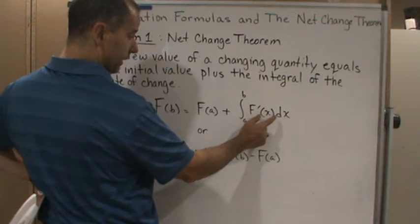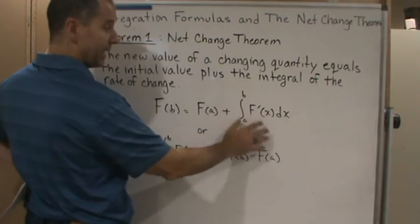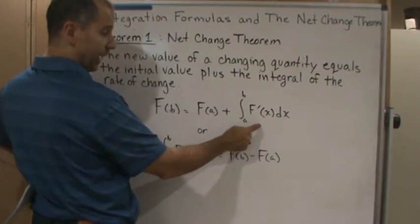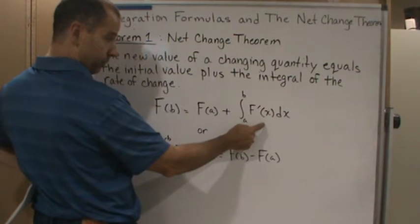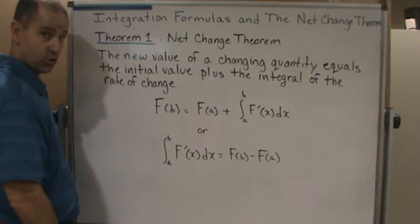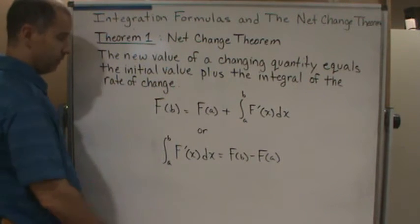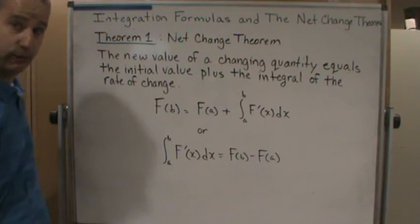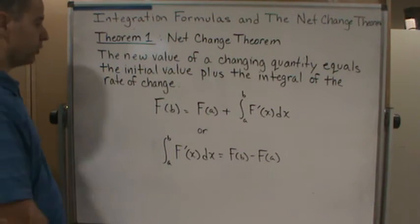By integrating the velocity—which gives you net change in area—and adding that to the initial value, you get the final value. You could also use this for looking at profits.